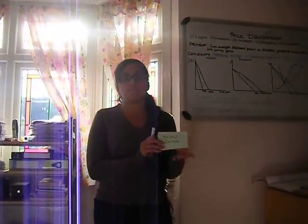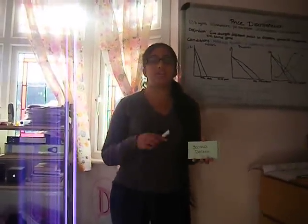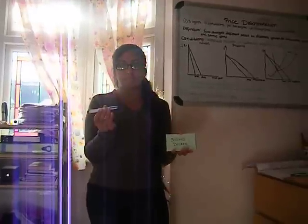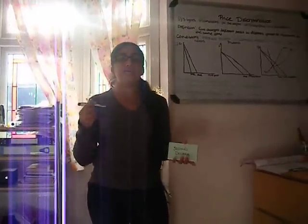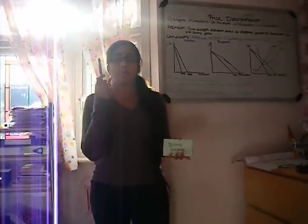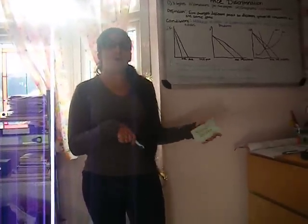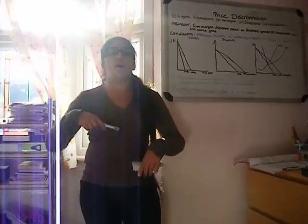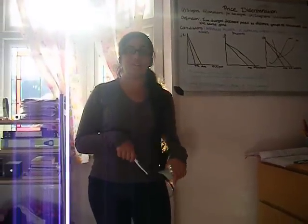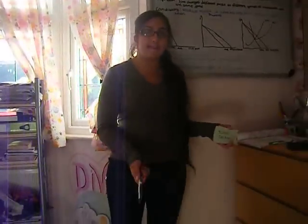Second degree price discrimination is price discrimination against the amount of products you buy. So if you come into a shop only willing to buy one pen, but there's an offer to buy two pens and get one free, you might be willing to pay double the amount you originally thought in order to get those three pens.